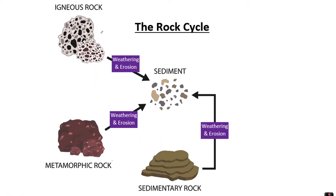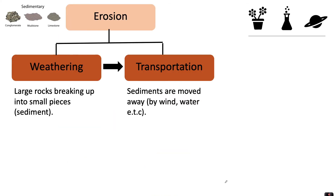This diagram shows just part of the rock cycle. It shows igneous, metamorphic, and sedimentary rock being weathered or eroded into sediment, which is small pieces of rock. In the video on sedimentary rocks we described this process. Erosion is made up of weathering and transportation — large rocks breaking up into small pieces called sediment, which are moved away by wind or water.